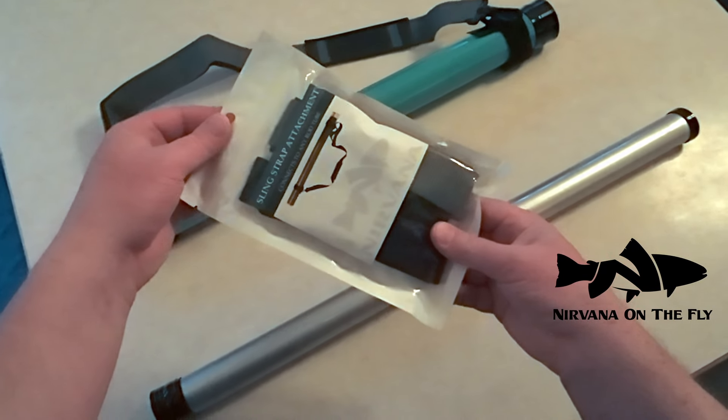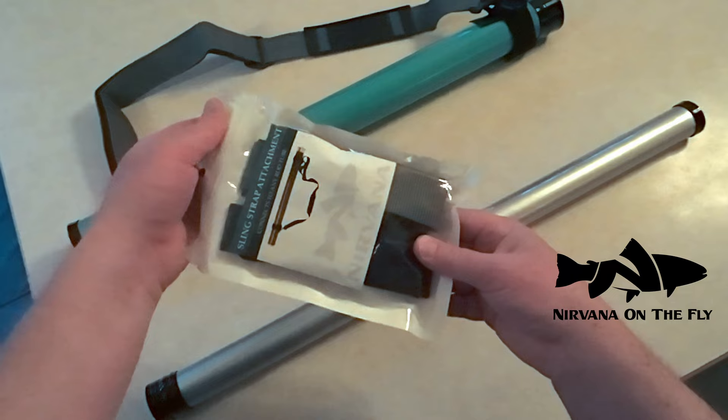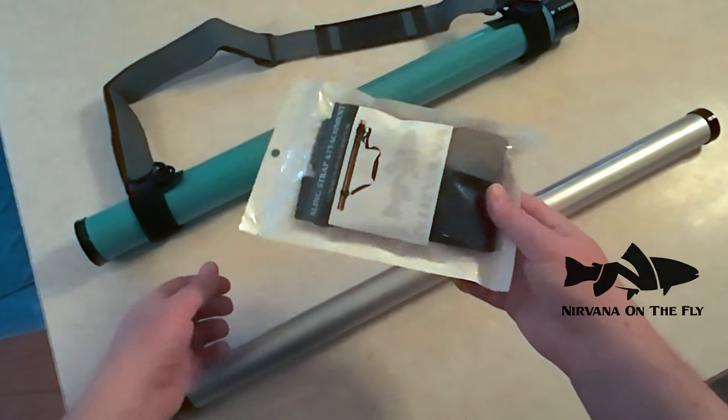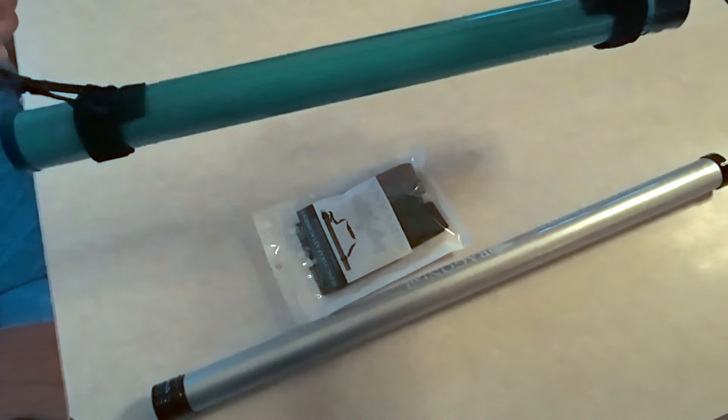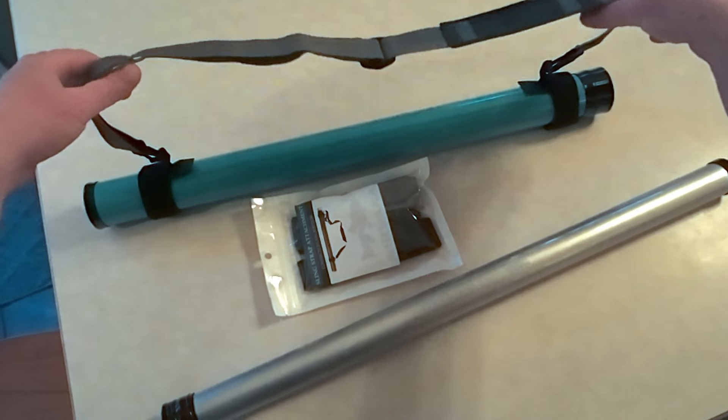I'm going to show you guys how to use our sling strap attachment from Nirvana on the Fly. They can add a sling strap to any rod tube so you can sling it over your shoulder.